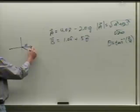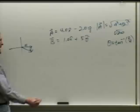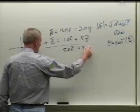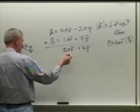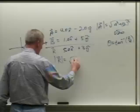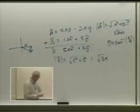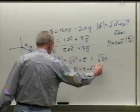You do a similar thing for the other vector. Adding A and B gives 5.0 x-hat plus 3 y-hat. The magnitude of this resultant is the square root of 5 squared plus 3 squared, which is the square root of 34, about 5.8. The direction theta is the inverse tangent of 3 over 5.